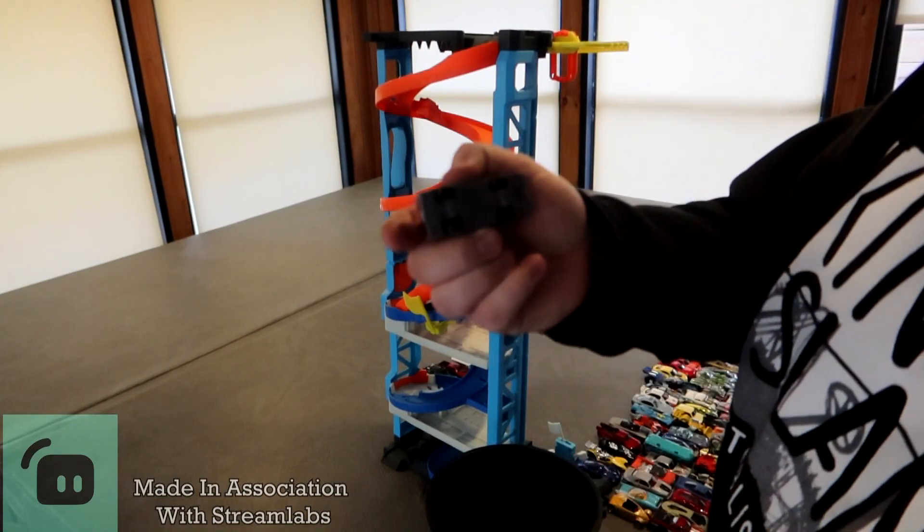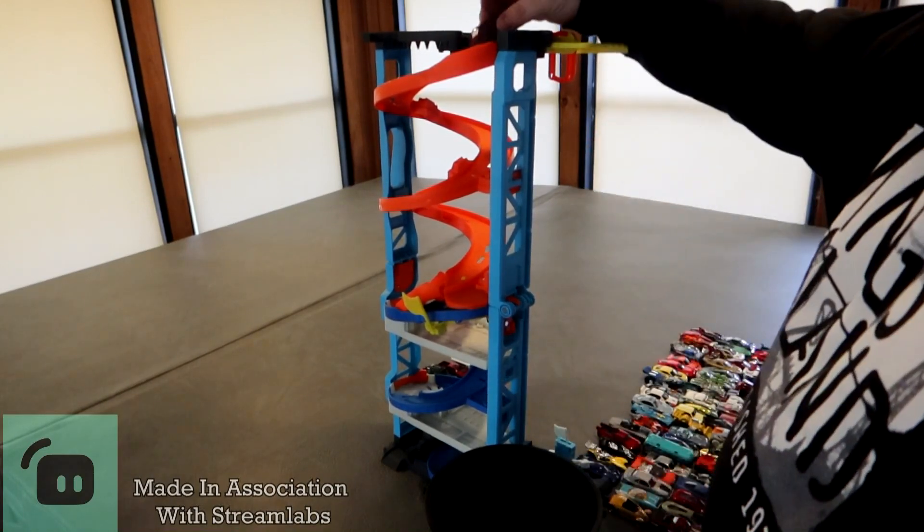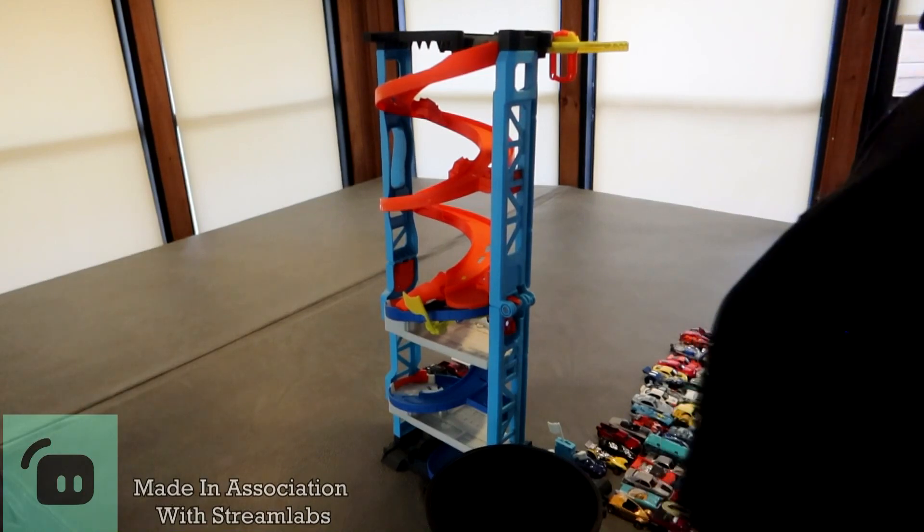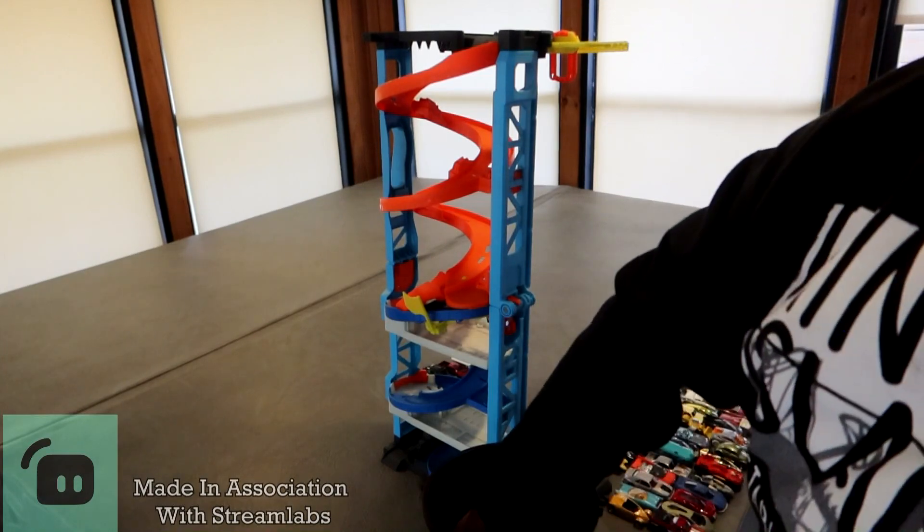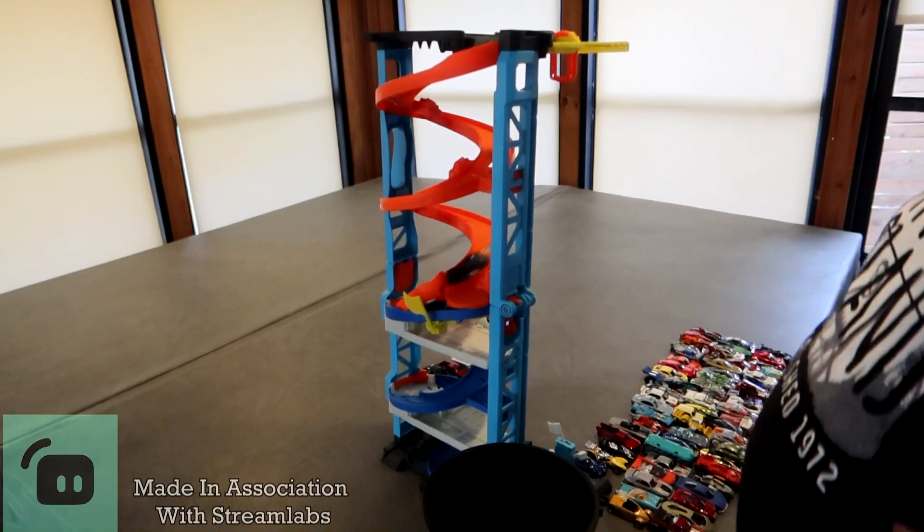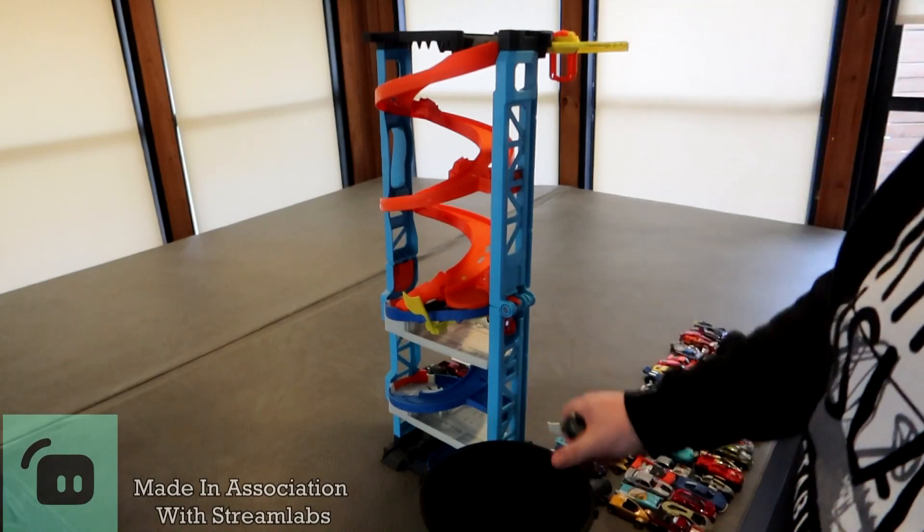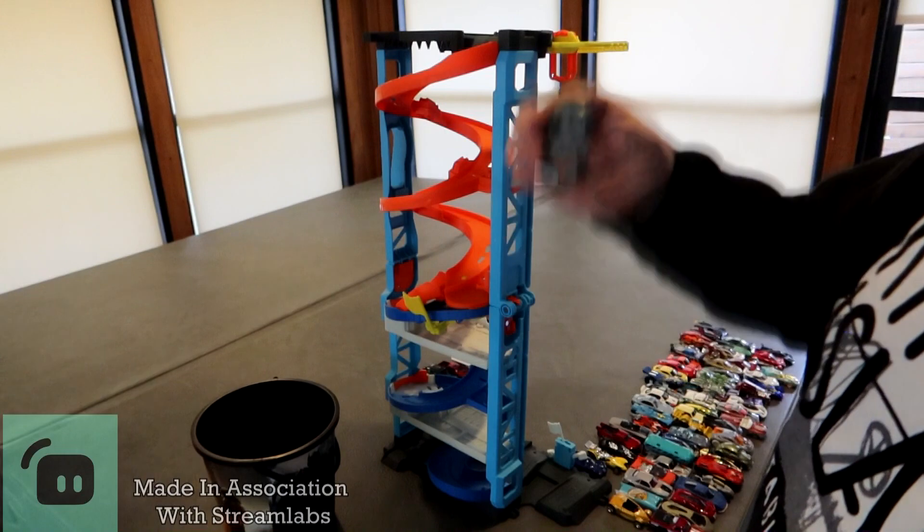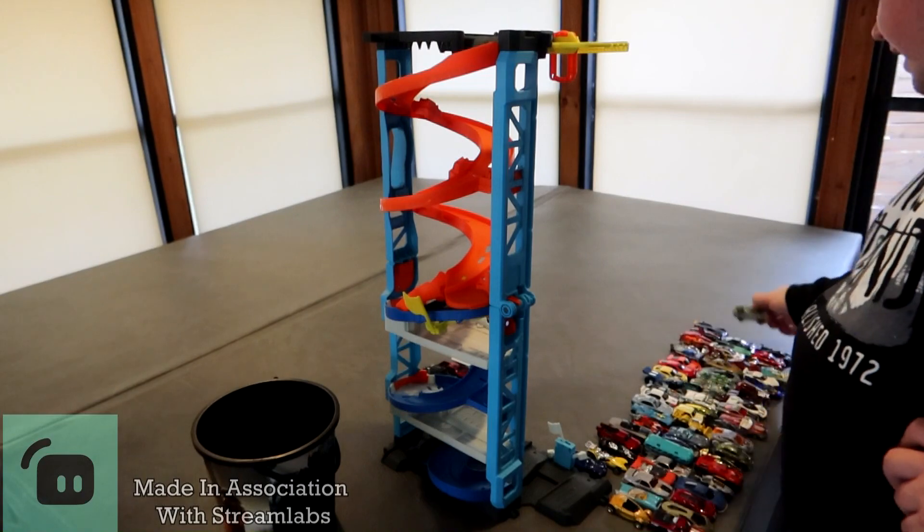Here we have a Shelby Cobra. Here we have the 86 Toyota Van. Oh, oh okay. Well, double fall off, I guess that's basically just a fail automatically. Next is Slide Kick. And the last model that we got out of the bucket is 24-7. And surprisingly makes it all the way down.